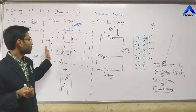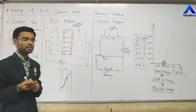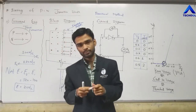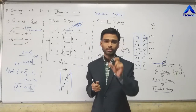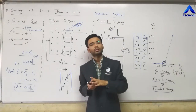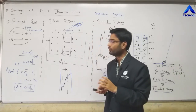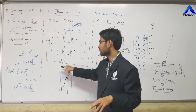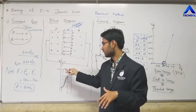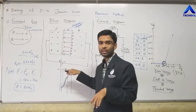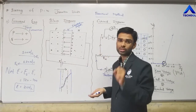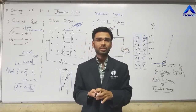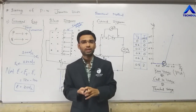So that covers the biasing of the PN Junction Diode. We have seen forward biasing — true connection means P is connected to the positive and N is connected to the negative. The effect of the electric field, the action of the external battery, and the direction and effect of the electric field are most important in these topics. In the next video lecture, we will see the reverse biasing of the PN Junction Diode. Thank you.